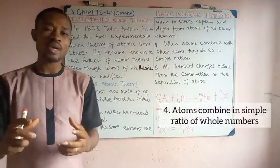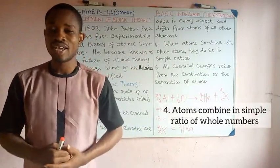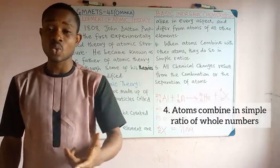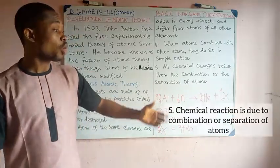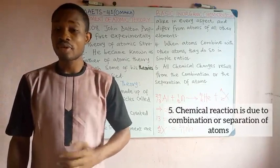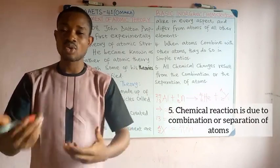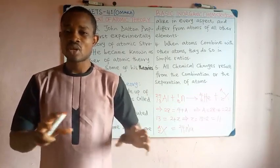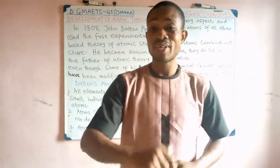Number four: when atoms combine with other atoms, they do so in simple whole-number ratios. Consider the formation of water — the ratio of hydrogen to oxygen is 2:1. Number five: all chemical changes result from the combination or separation of atoms. When electrons combine or are separated, it leads to chemical changes. In the next video, we will consider scientists that discovered certain atomic particles.